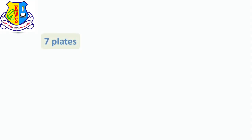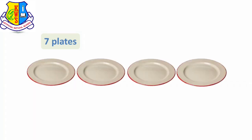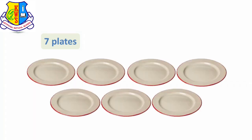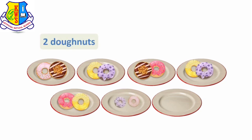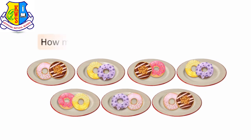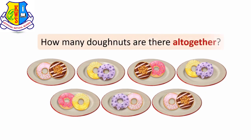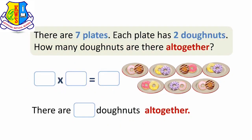We understand that there are 7 plates and each plate has 2 donuts. The question is, how many donuts are there all together? So we write 7 times 2 is equal to 14.